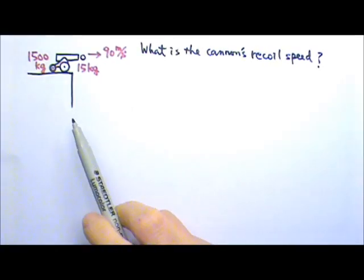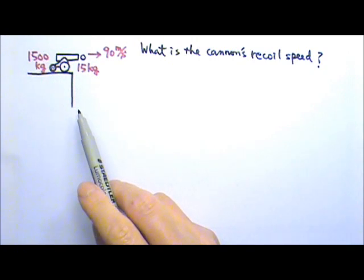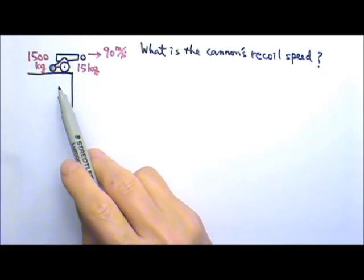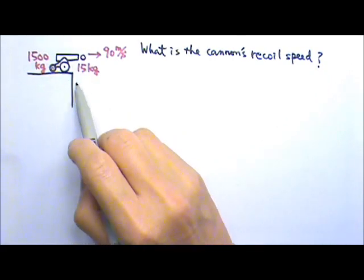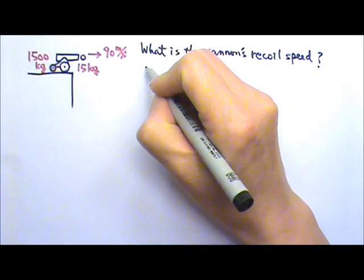This problem is actually the same as the explosion problem we did in the last video. In this scenario, instead of energy being released from a spring, we have energy released from gunpowder. If we ignore friction, the net force on the whole system is zero. That means we have conservation of momentum.